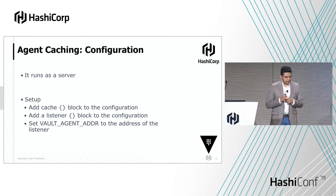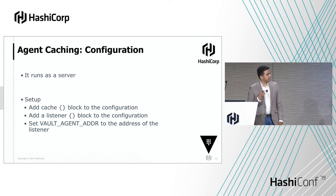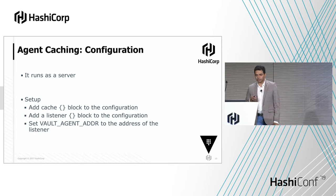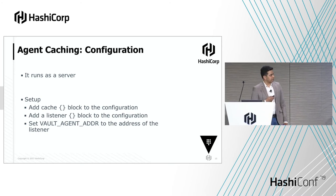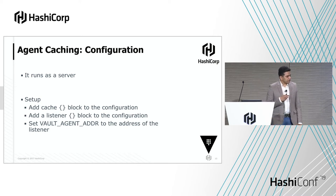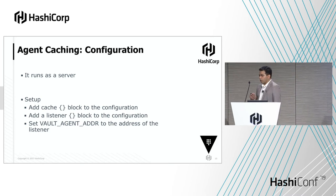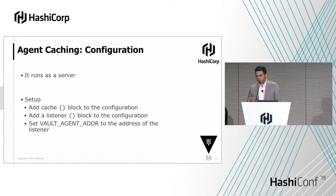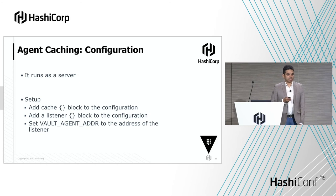Let's see how agent caching is configured. It's pretty simple — there are three things to add. First, a cache block to let the agent know it needs to run in cache mode. Second, a listener block telling what to listen on — it supports TCP and Unix socket. Third, setting the VAULT_AGENT_ADDR environment variable. Applications already know about VAULT_ADDR, but if you set VAULT_AGENT_ADDR, the CLI will override the Vault address and send requests to the Vault Agent instead of the Vault server.